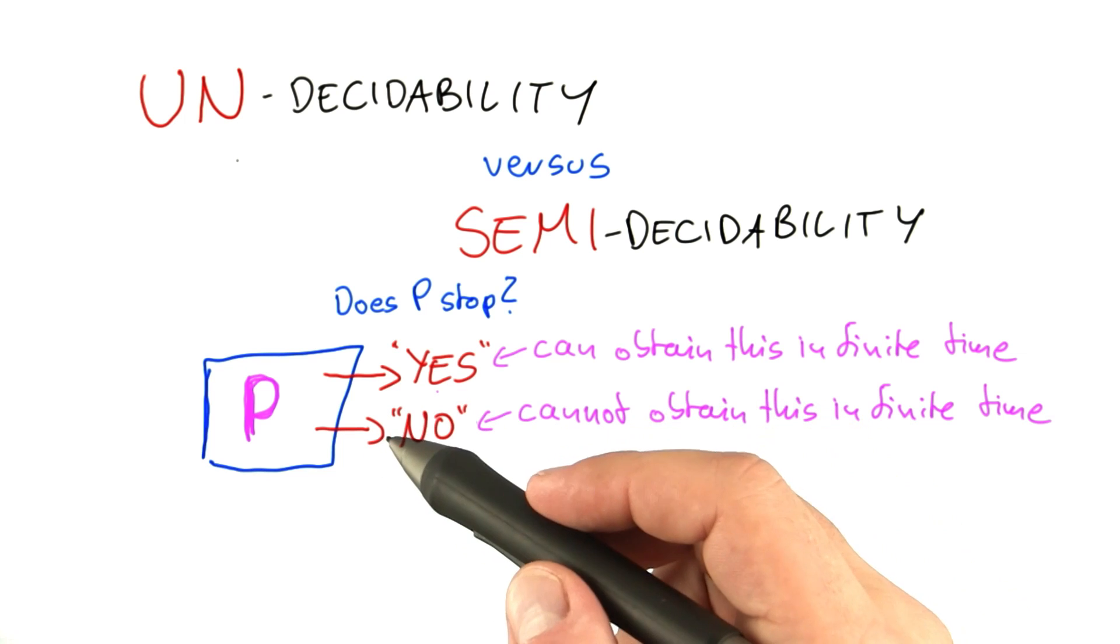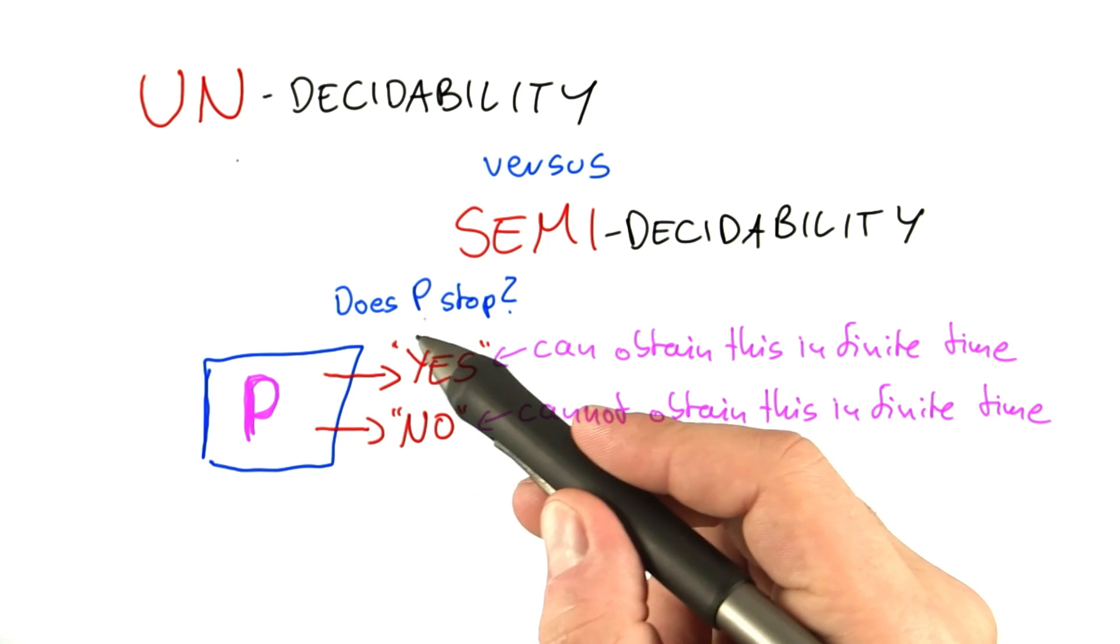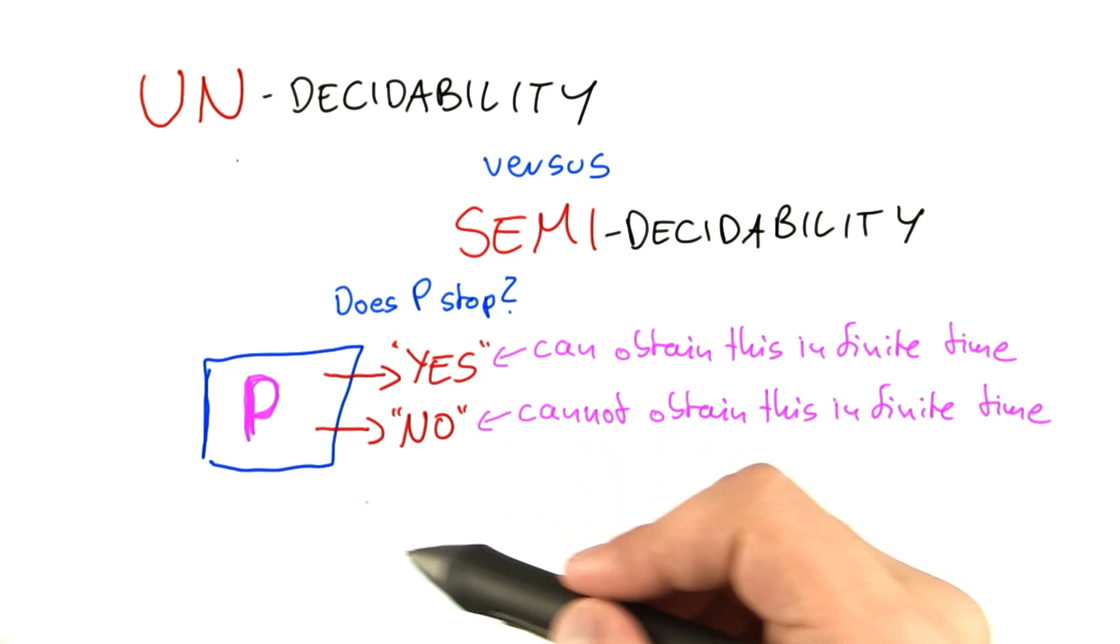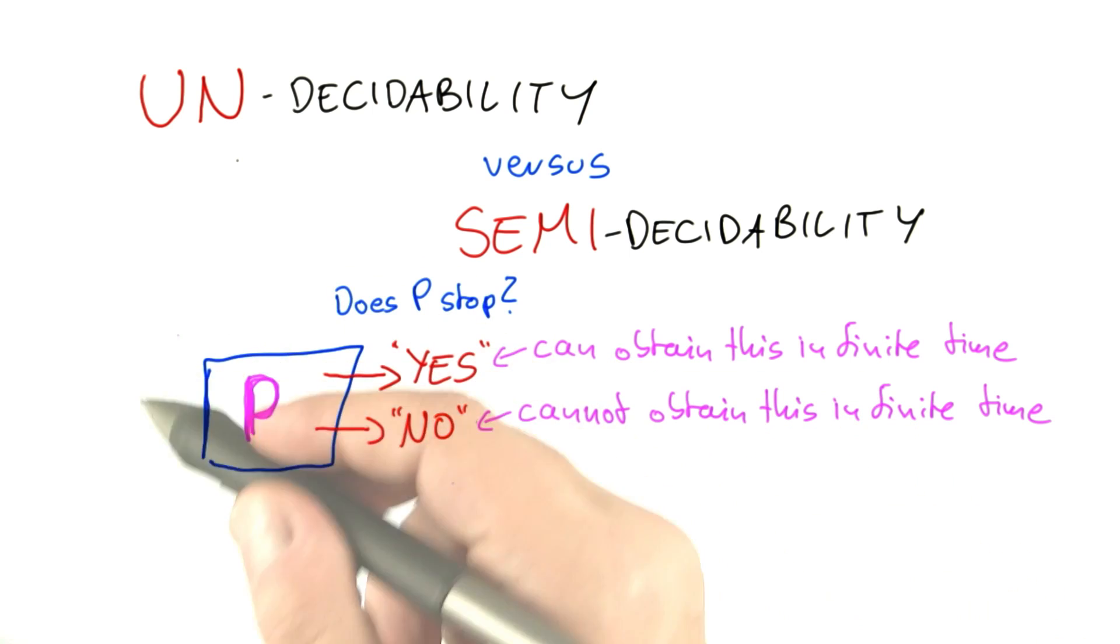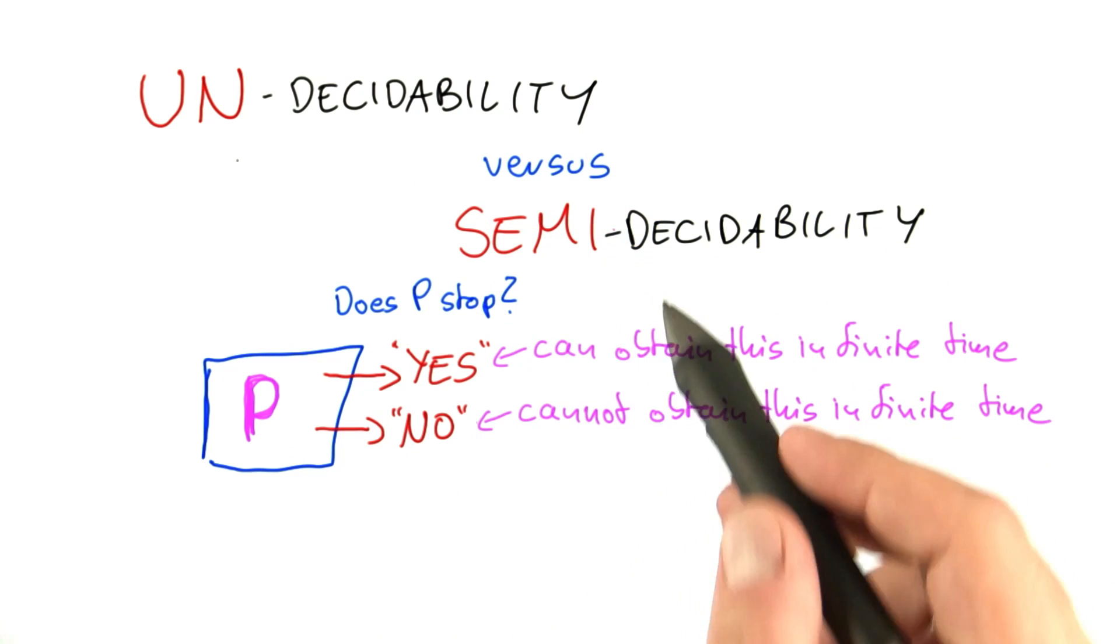It's also called undecidable because we cannot output a clear yes or no after a finite amount of time. Why this nitpicking? What's the difference, you may ask? The interest of this is, of course, rather theoretic.